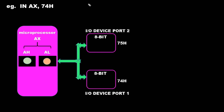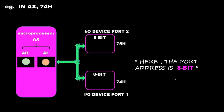So in this case with a 8-bit port address, the AX register is 16-bit so it needs 16-bit data. The first 8 bits come from port address 74h and the next 8 bits come from port address 75h, settling in AH and AL respectively to form the AX register.